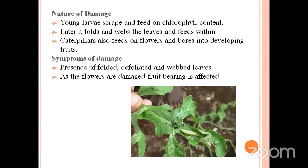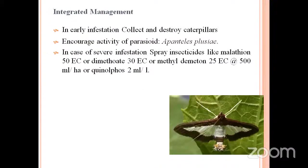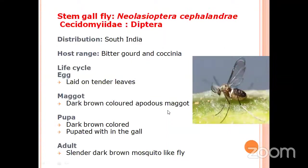Coming to the nature of damage: the young larvae scrape the chlorophyll content and feed on it. Later, they fold and web the leaves, feeding from inside. They also feed on the flowers and bore into the developing fruits, leading to reduced fruit yield and stopping of fruit bearing. Coming to the management: handpicking and killing of larvae. Parasitoids can eventually parasitize them. In case of severe infestation, spray dimethoate 30 EC or methyl demeton 25 EC at the rate of 500 ml per hectare.